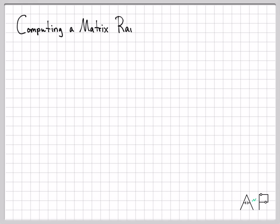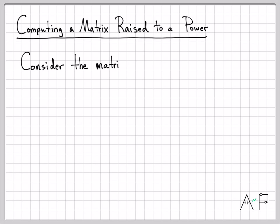In this example, we're going to work with a matrix that we have diagonalized, and we're going to show how that diagonal representation makes it much easier to compute it raised to some arbitrary power. We're going to work with a matrix A, but A has been factored in a very special way — written as a matrix P times a matrix D times P inverted. So P, D, P inverse is the representation.